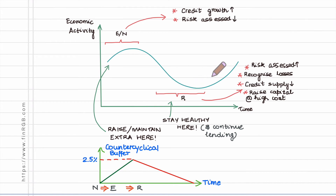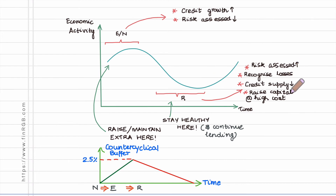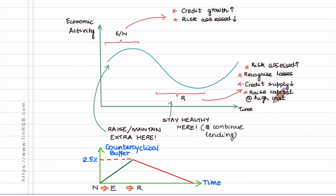During this phase banks start to recognize higher levels of losses and collectively all banks slam the brakes on any kind of lending, so credit supply in the entire economy comes down. Banks are now reeling under excessive losses for which they have insufficient reserves and capital, and during this period capital comes at a high cost.